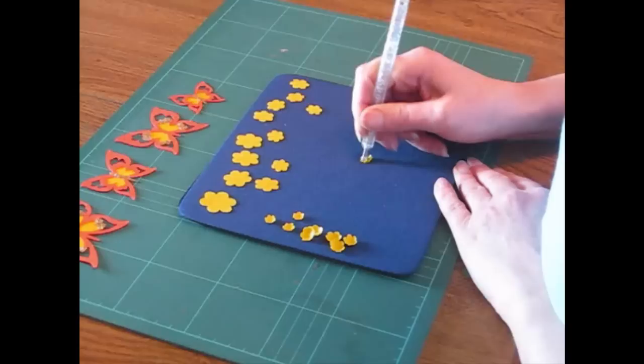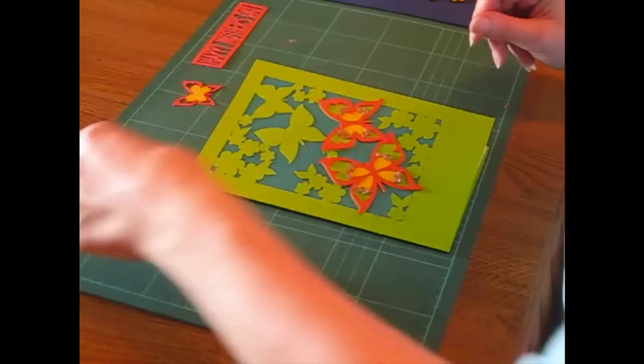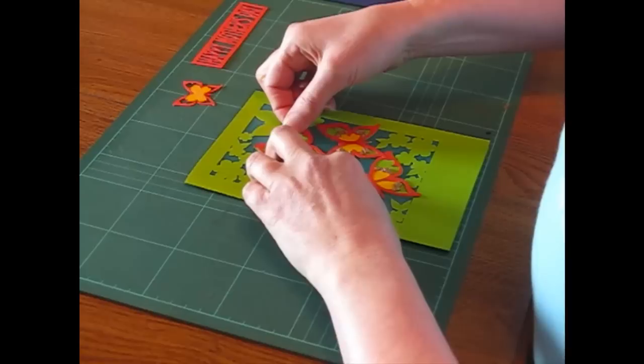Now I'm going to start putting everything together. I've already peeled off the backing on the tape on all of the cut out butterflies so all I have to do is carefully line them up with the butterflies on the card.